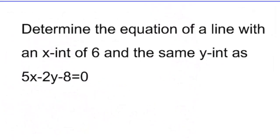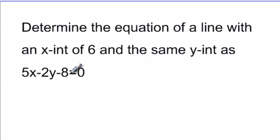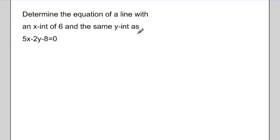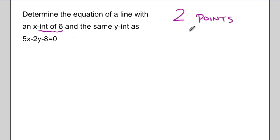Let's take a look at some word problems. Determine an equation of a line with an x-intercept of 6 and the same y-intercept as 5x minus 2y minus 8 equals 0. Remember that to solve these questions we need two points. I know my first point — an x-intercept of 6 means the point is at (6, 0).